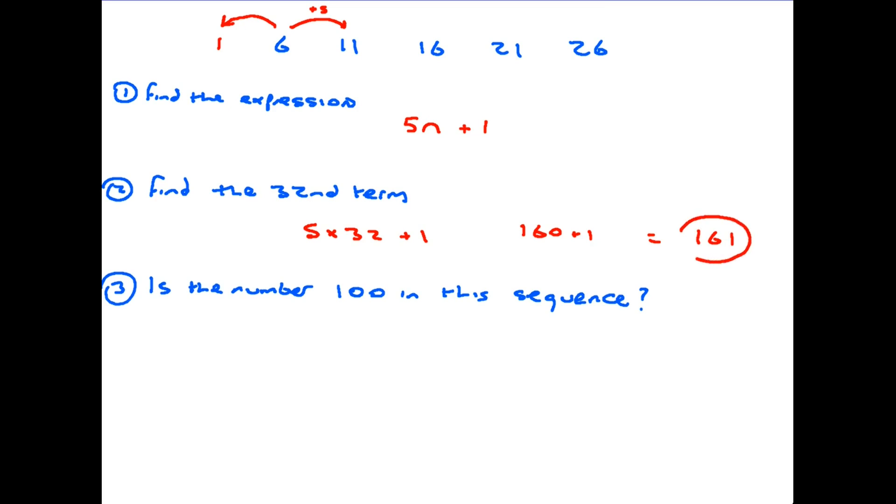Is the number 100 in the sequence? Well again we can write 5n plus 1 equals 100. Therefore 5n equals 99. So n equals 99 divided by 5. Now 99 divided by 5 gives us 19.8. It is not an integer therefore it is not in the sequence. However yet again we could have saved ourselves from doing this piece of algebra by taking a look at the numbers in the sequence. Every single number ends in either a 1 or a 6 and that will never change. Therefore 100 ends in a 0. It could not possibly have been in that sequence and an explanation of that is a perfectly good answer.